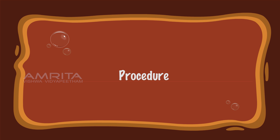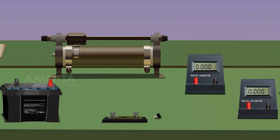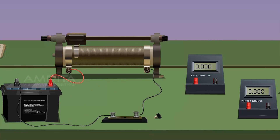Procedure: Connect the positive terminal of the battery E1 to the lower end of the rheostat RH1. The negative terminal of the battery is connected to the other lower terminal of the rheostat through the key K1. The negative terminal of the voltmeter is also connected to the other lower terminal of the rheostat through the key K1.